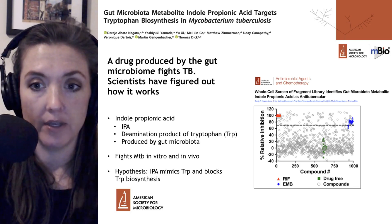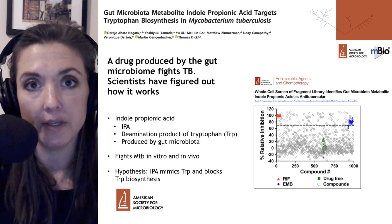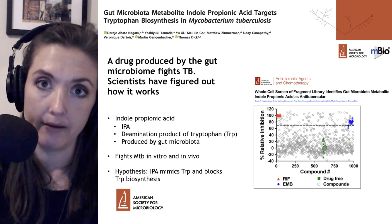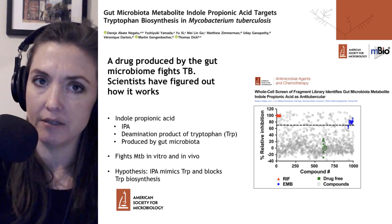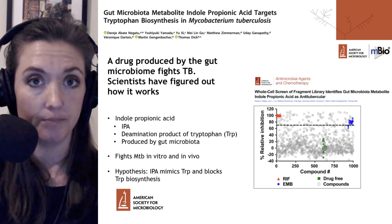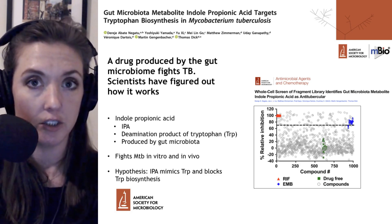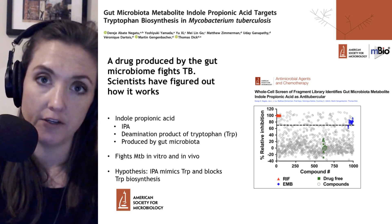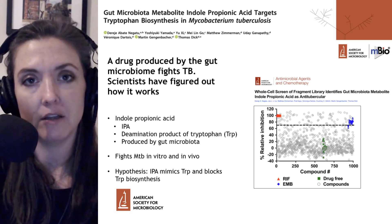Those that were able to inhibit above the threshold — shown on the right-hand side with that black dashed line — were then tested for their ability to inhibit other mycobacterial species and for their toxicity against mammalian cell lines. Those that could inhibit a broad array of mycobacterial species but not be very toxic to mammalian cells were selected. Indole propionic acid, a close chemical cousin to tryptophan, was found in this screen to inhibit growth and fight infection both in in vitro cell culture and in an in vivo mouse model of tuberculosis.